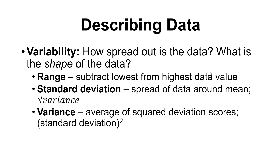That tells us where the middle of our data is, but it doesn't necessarily tell us much about the shape of the data. We can use another term called variability to describe how spread out our data is — what is that shape of the curve? There are a couple of different ways you might have seen this — you've probably heard the term standard deviation and variance.